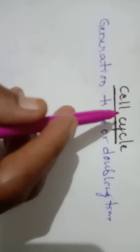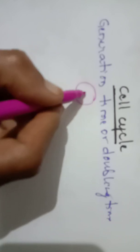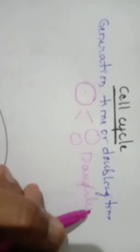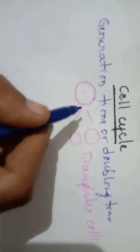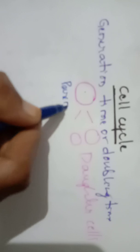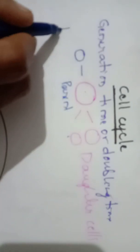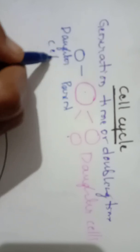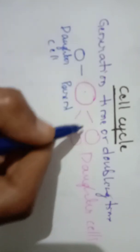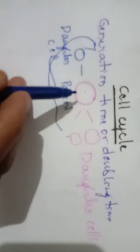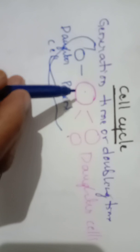That means, from where does the cell start its inception? Once a cell divides, what happens? When you have a parental cell, the parental cell divides into two to give rise to daughter cells. From where does the parent cell come? The parent cell also was once a daughter cell, and then it has grown into a parent cell. This entire thing is known as the generation time or cell cycle. In short, cell cycle is nothing but the sequence of events.